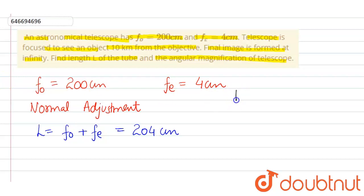And next we have to find magnifying power. So magnifying power formula is f₀ upon fₑ, which would be equals to 200 upon 4. That means it will be equals to 50.